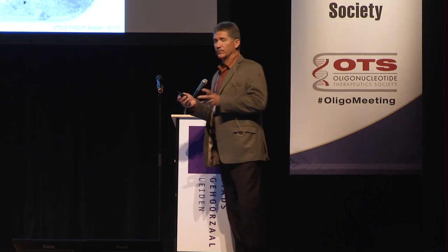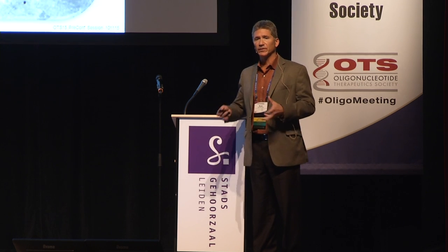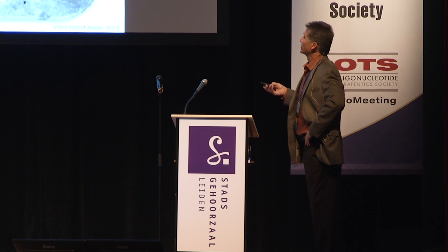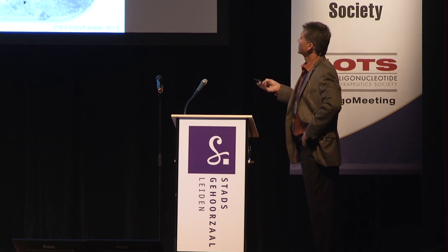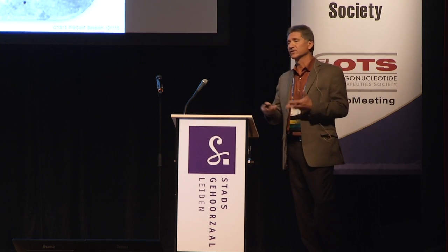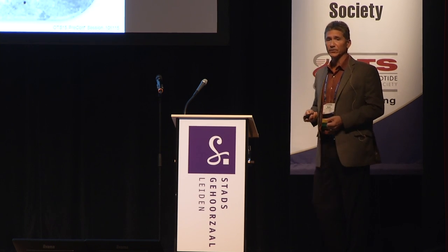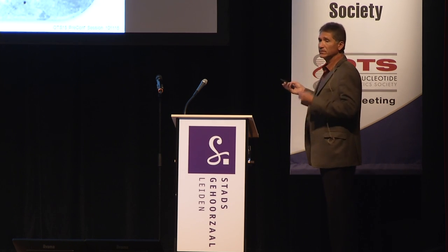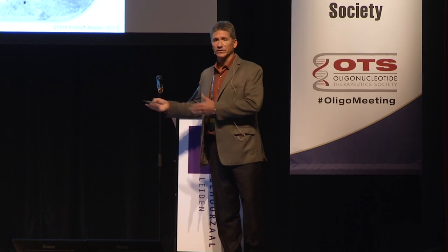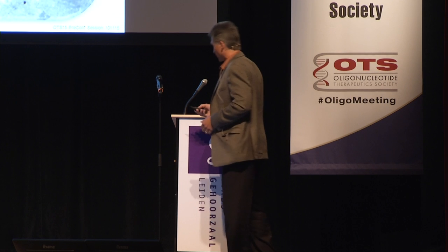This slide shows a single-stranded phosphorothioate oligonucleotide distributed in a rat kidney. Brown staining identifies oligonucleotide by immunohistochemistry. Oligonucleotide is widely distributed, particularly in the proximal tubular epithelial cells. But when you look at an electron micrograph, the majority of oligonucleotide is contained within vesicular structures and is not available for binding to RNA — that's the nonproductive compartment. You can also see oligonucleotide that appears diffuse and free of these structures, presumably available for binding to RNA — the productive compartment.